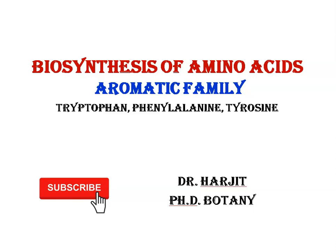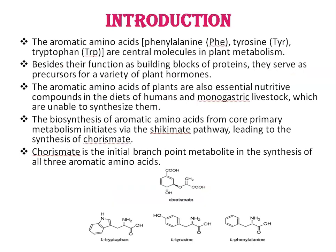Today we are going to talk about biosynthesis of the aromatic family of amino acids. In this lecture we will discuss the biosynthesis of tryptophan, phenylalanine, and tyrosine. These aromatic amino acids are central molecules in plant metabolism. Besides their function as building blocks of proteins, they serve as precursors for a variety of plant hormones such as auxin and salicylate. They are also essential nutritive compounds in the diets of humans and monogastric livestock. The biosynthesis of aromatic amino acids from core primary metabolism initiates via the shikimate pathway, leading to the synthesis of chorismate.